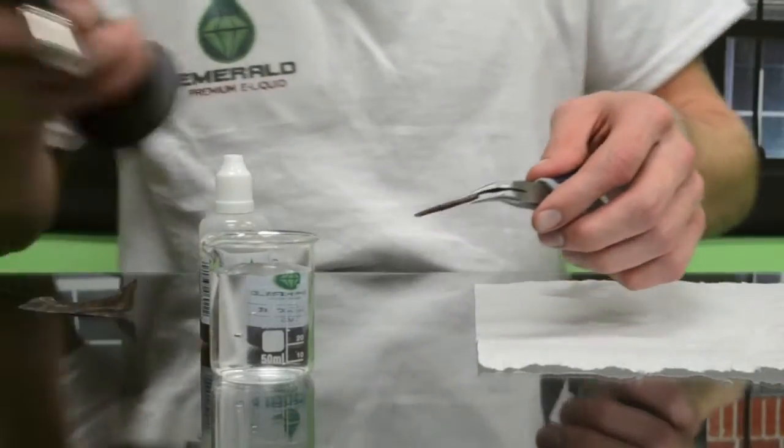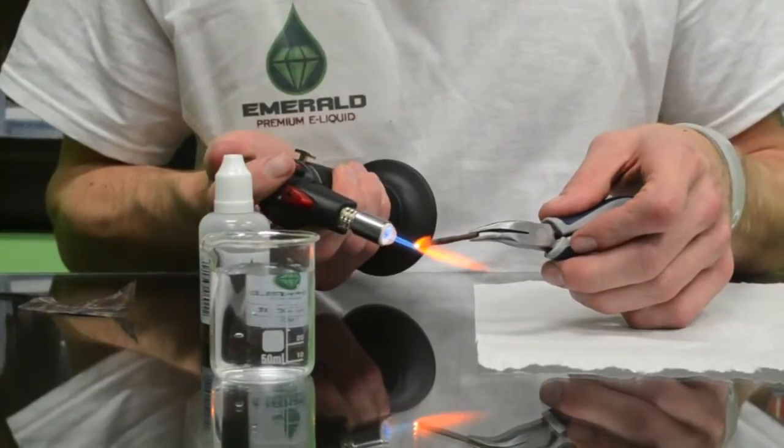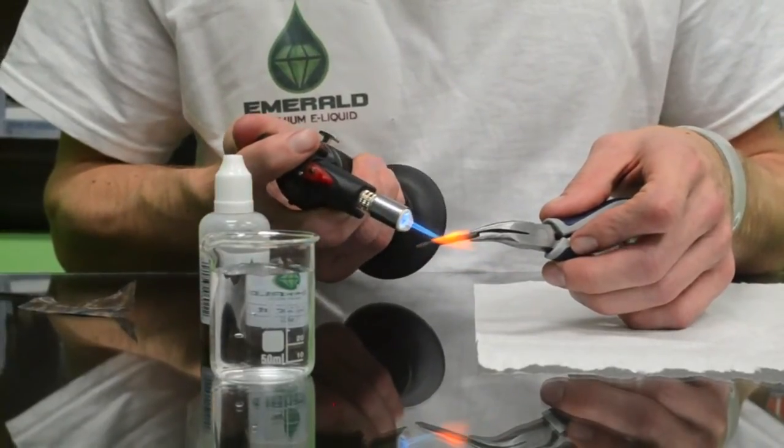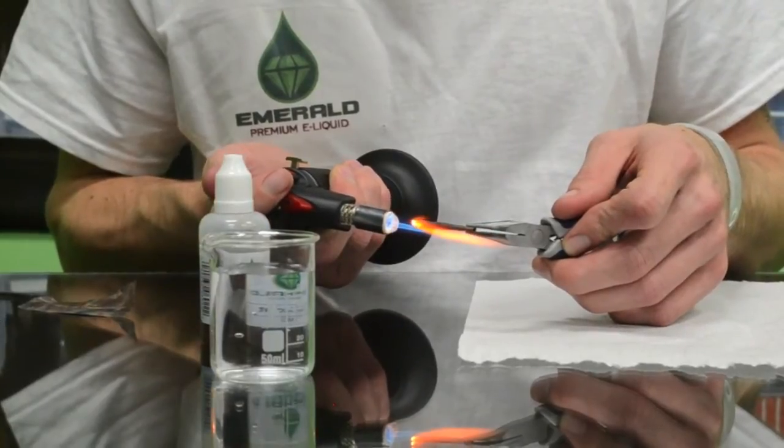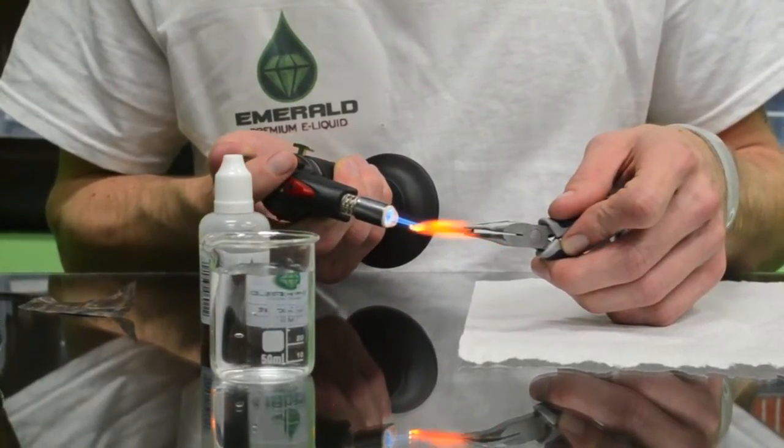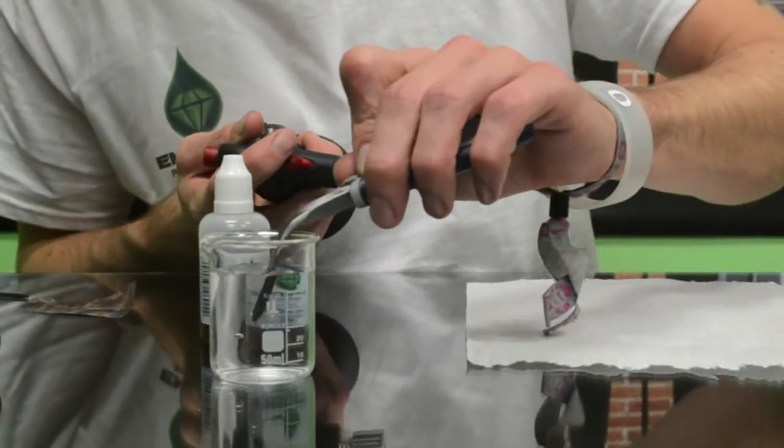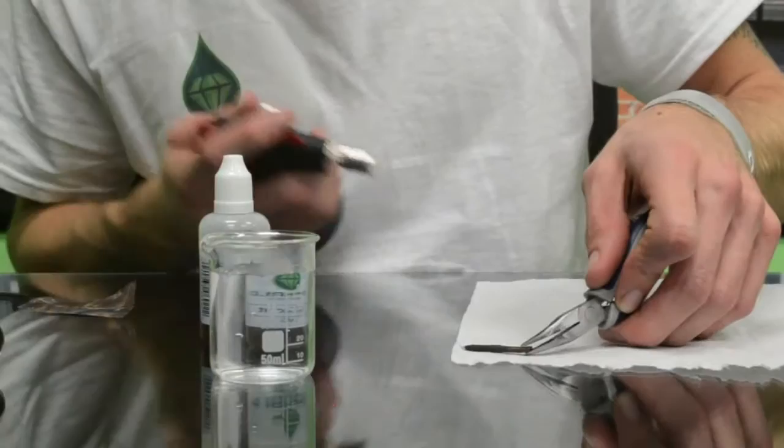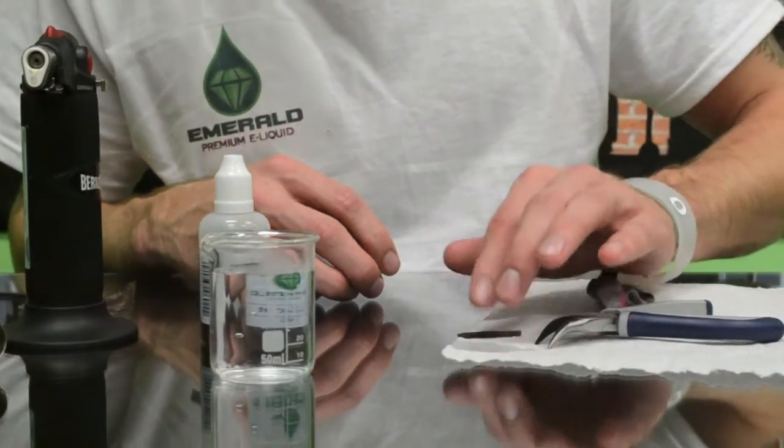The next step is to get this oxidized. To do that, you just burn it until it's red hot. Once you get it red hot, dip it in the water, let it dry, and then repeat that process about three times.